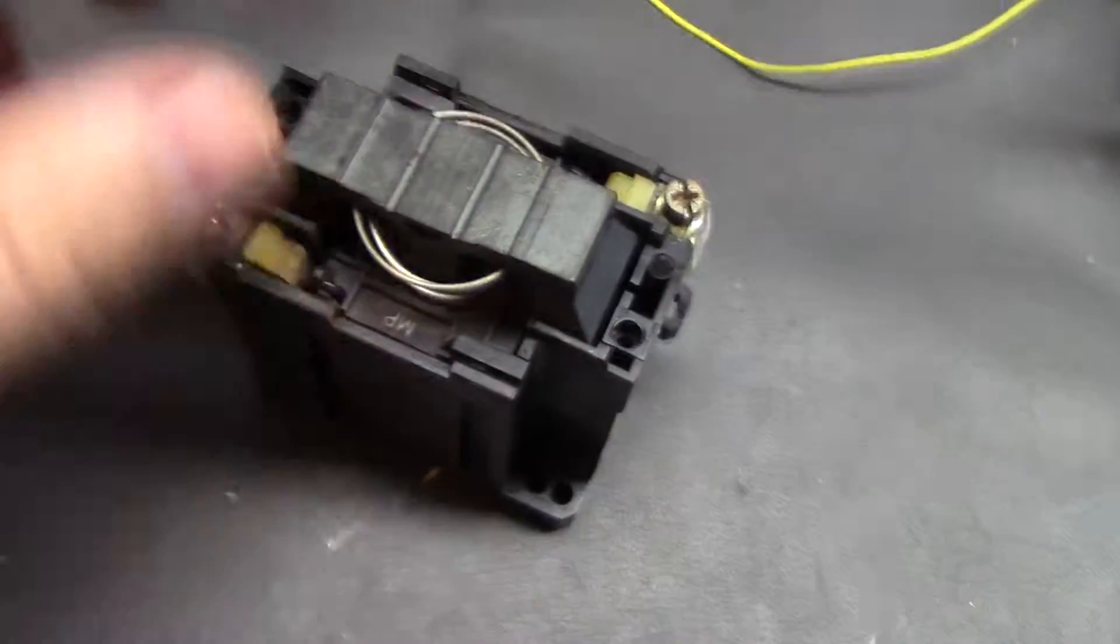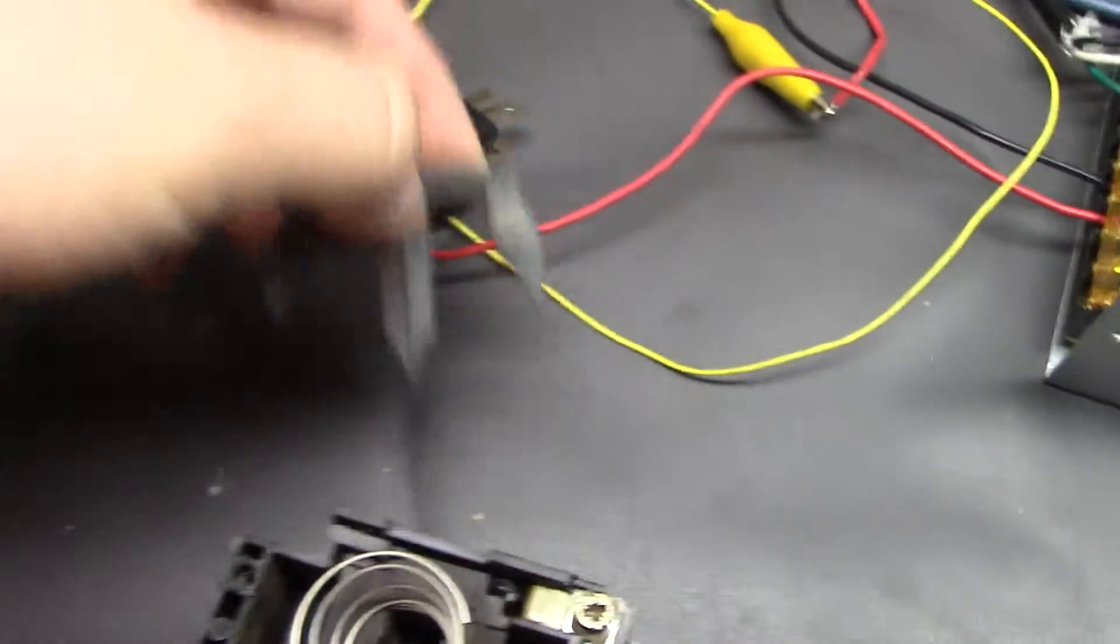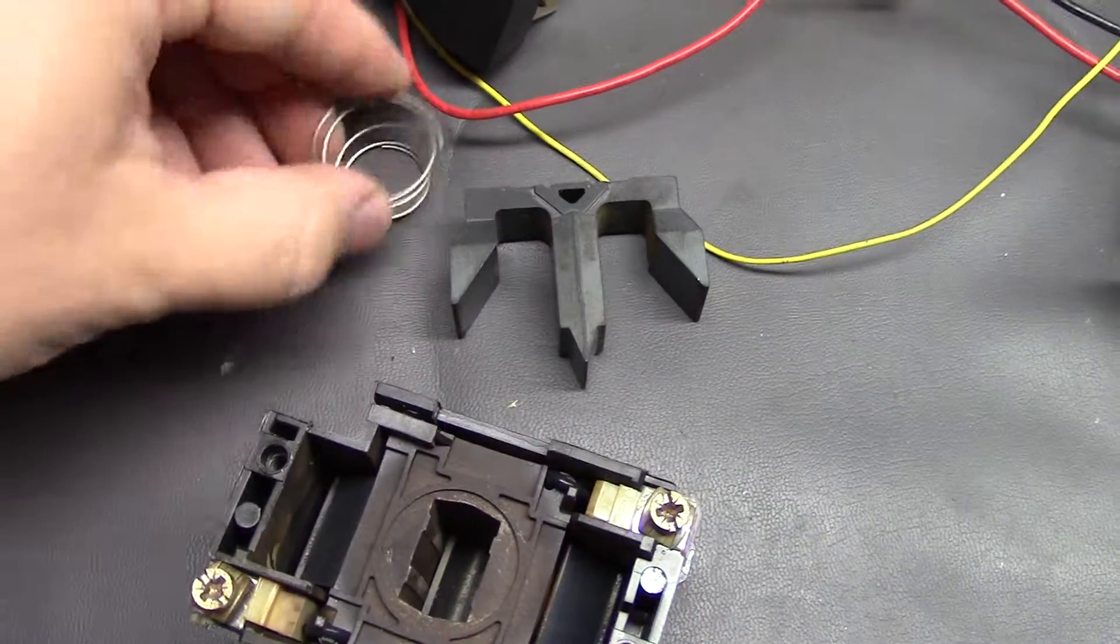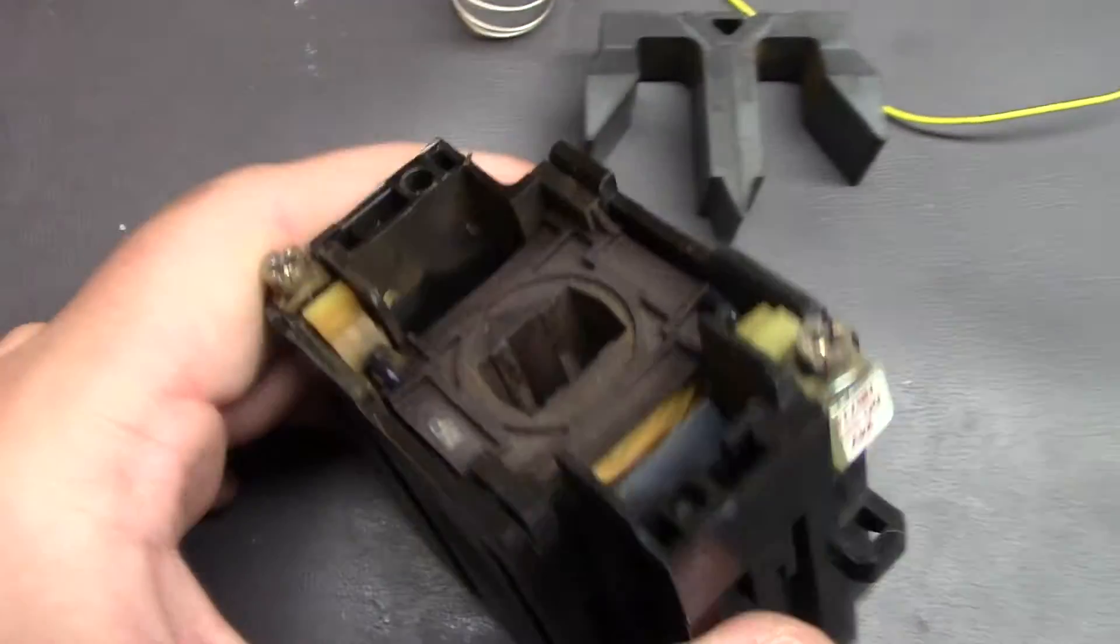Underneath you have the mechanicals of it, which is the most metal looking plunger on the planet that I've seen at least, return spring, and then here's your coil with its two electrical connectors.